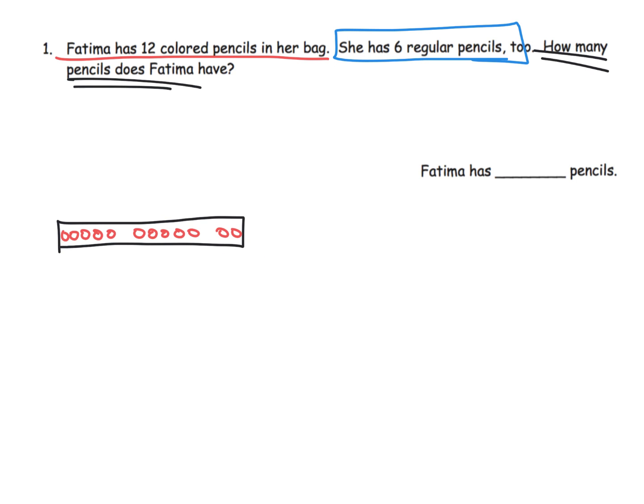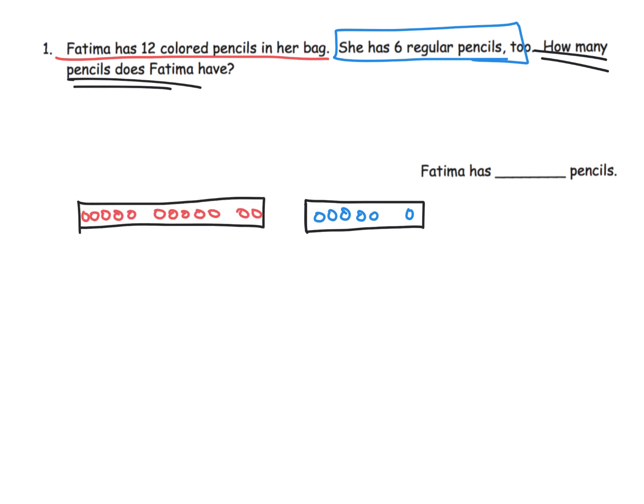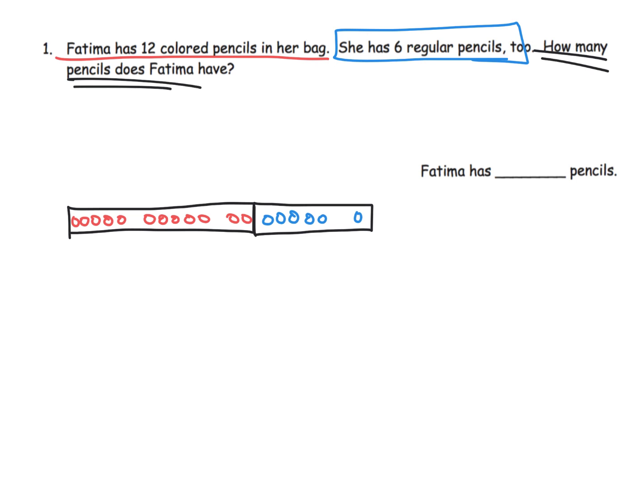And then it says she also has six regular pencils. So I'm going to draw 1, 2, 3, 4, 5, 6. And so here is her regular pencils. So we've got colored pencils here, we've got regular pencils here. And then the question is asking how many pencils does she have, as in all together.